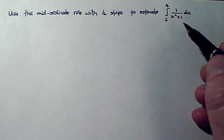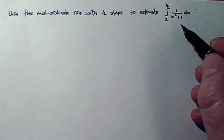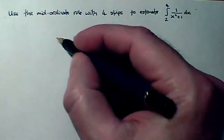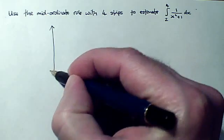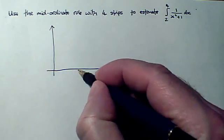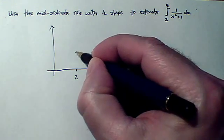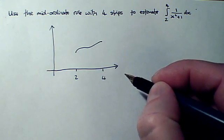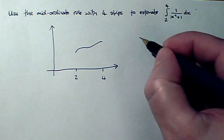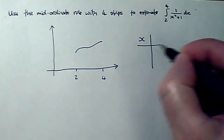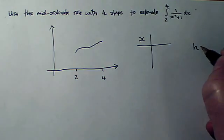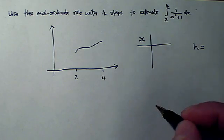The first thing to do with any numerical integration is to do a rough sketch graph. This is not to get the shape of the graph right, because you may not know it, but any graph between 2 and 4 will do the trick. The point of the graph is to visualize the strips we're using and make sure we get the right x-values in our table of x's and y's, and that we get the right value for the width of the strip, which we call h.